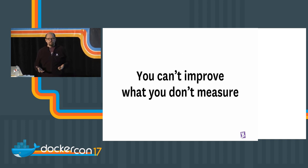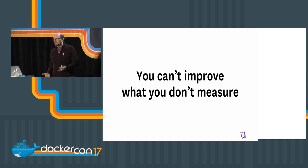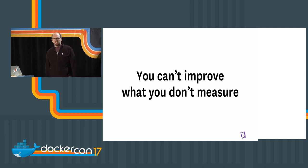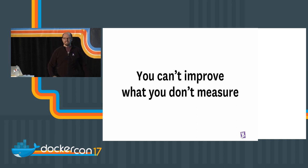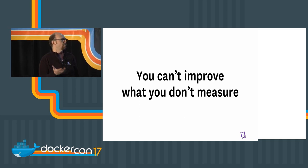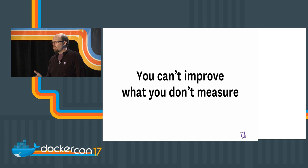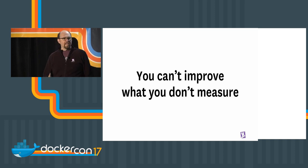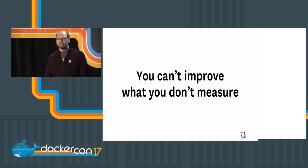You can't improve what you don't measure. You've got to be measuring. Did the code I worked on today actually improve things, or did I go in the wrong direction? It would kind of suck if you profiled one day, then did a bunch of stuff for the next week, and looked again thinking, 'Oh my god, it's 100% slower.' If you're not monitoring all the time, it's really hard to figure out what change screwed things up.